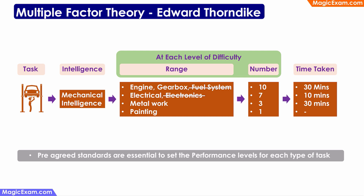Let us look at how Edward Thorndike's multiple factor theory and the way he is suggesting intelligence can be measured can be used in real life. Suppose I have a workshop — a garage — and I look at all the mechanics working for me and I have to identify which of them are the best mechanics. If I were to use Thorndike's theory, I know that all the tasks in my garage require mechanical intelligence, and I need to have some pre-set standards on the various levels of work that need to be done.